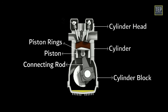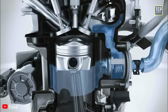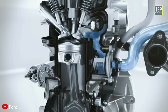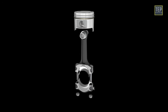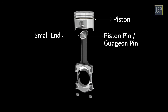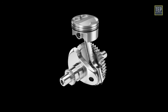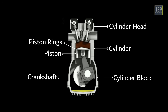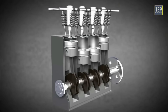The connecting rod connects the piston to the crankshaft, converting the reciprocating motion of the piston into rotary motion of the crankshaft. The upper end of the connecting rod is called the small end, which carries the piston by means of a floating pin called the piston pin or gudgeon pin. The lower end is called the big end, which connects to the crankshaft through the crank pin.